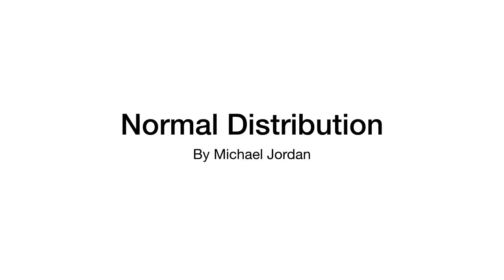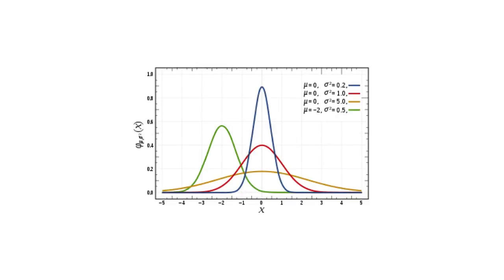Hey everyone, it's MJ and in this video we're going to be talking about the normal distribution and how it got its term of normal. If we have a look at the normal distribution, we can see that it is bell-shaped and it is a continuous distribution. It's also known as the Gaussian distribution.